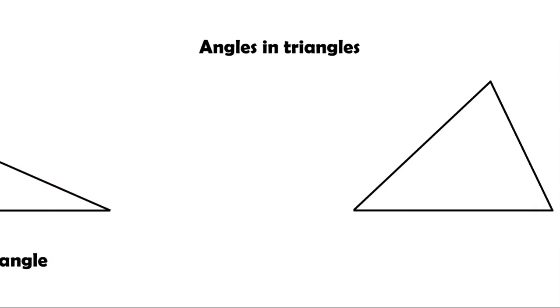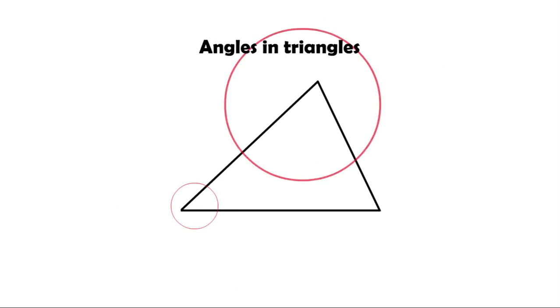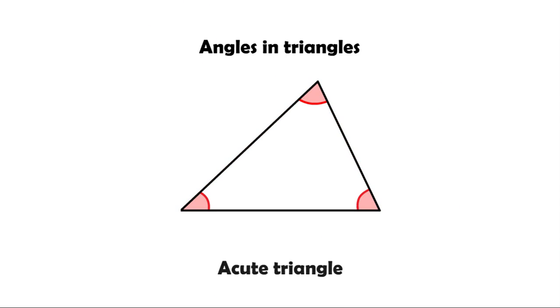What about this triangle? As you can see, it has no right angles or obtuse ones. All of its angles are acute. This type of triangle is called an acute triangle.